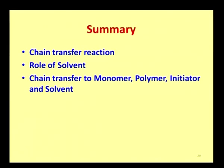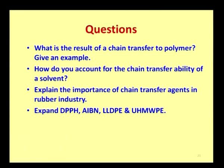As a summary, today we have seen all about chain transfer reactions — especially the role of the solvent and how chain transfer takes place in the polymerization reaction bath involving monomer, polymer, initiator, and solvent. Here are a few questions: What is the result of chain transfer to polymer? Give an example. How do you account for the chain transfer ability of a solvent? Explain the importance of chain transfer agents in the rubber industry. Expand the abbreviations DPPH, AIBN, LLDPE, and UHMWPE.